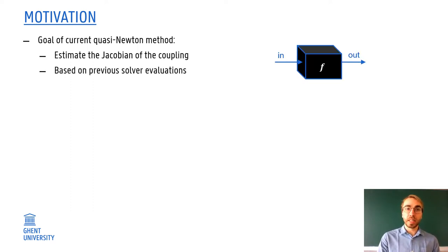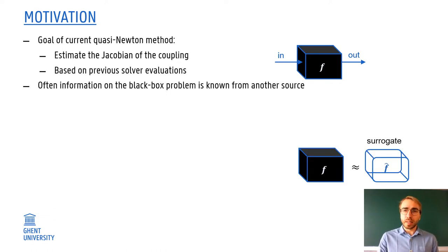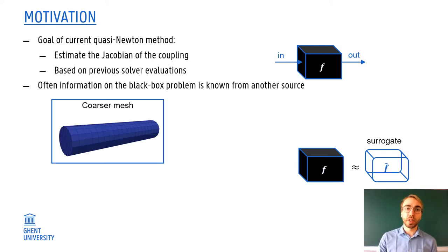This is done based on previous solver evaluations, similarly to what we have seen in one dimension. So we can represent this by this black box, where we just know input and output, and we try to know what's going on inside of that black box using these inputs and outputs. However, often we have some information about the black box problem which is known from another source. And now we can actually see this as a similar box, where we can more easily understand what's going on inside, so where we can more easily determine the Jacobian, basically.